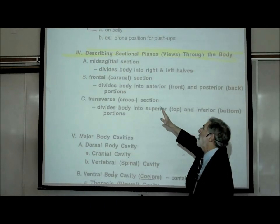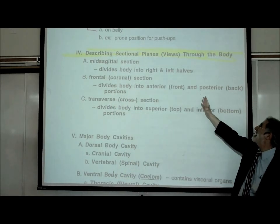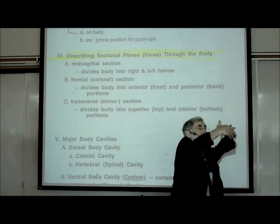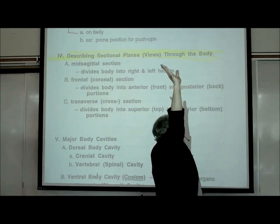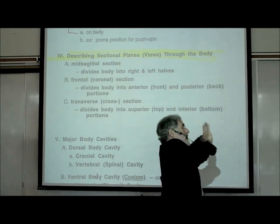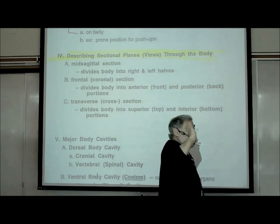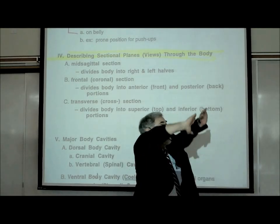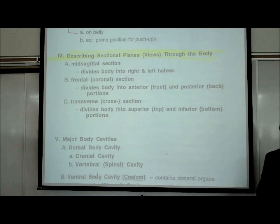Another way of dividing the body is a frontal or coronal section, which divides the body into anterior and posterior — front and back. So if we split the body like this into a front part and a back part, that's called a frontal or coronal section. With MRI and CT images, we get a whole series of coronal or frontal sections through the body — this is how we visualize the inside of a person.